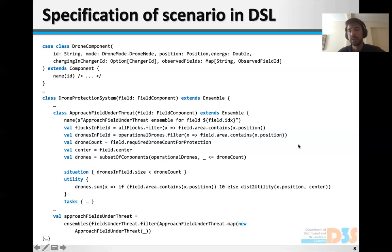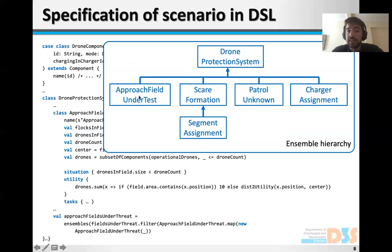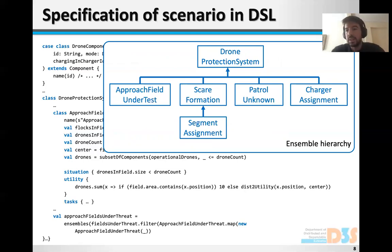Just to give you an idea of the big picture of the use case: we have six ensembles. The drone protection system is the top-level ensemble. Approach field under threat is one of its sub-ensembles, along with scare formation, patrol unknown, and charge assignment.